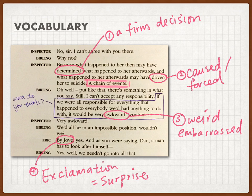Number two, 'driven' — driven here means forced. The inspector said what happened to Eva Smith may have driven her, may have forced her to commit suicide. Number three, 'outward' — outward means weird, embarrassing situations, very embarrassing. A very strange and embarrassed situation.